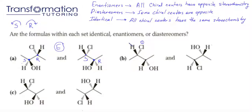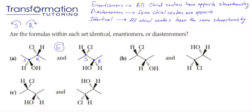Chlorine gets a one. Hydrogen is a four — of course, because it's the lowest atomic number, lowest priority. Then between the two carbons, this one has an OH attached to it, so it gets a two, and this one gets a three. So we have one, two, three, which looks like the R configuration. However, because hydrogen is not going in, we have to switch that configuration, and we will say that this is S.